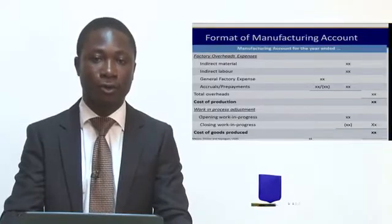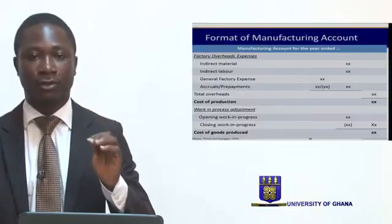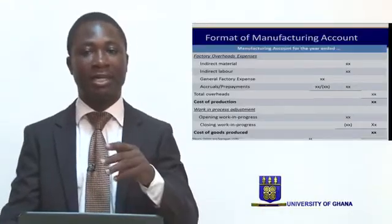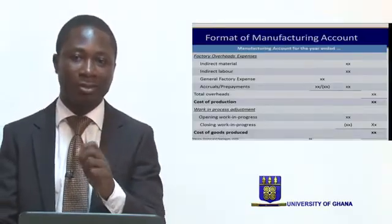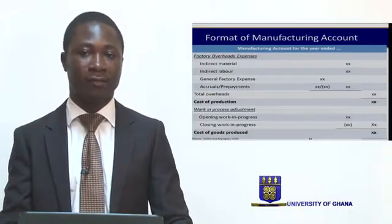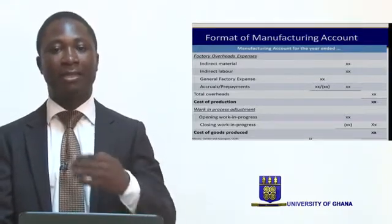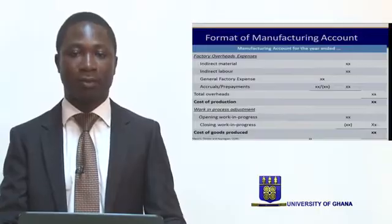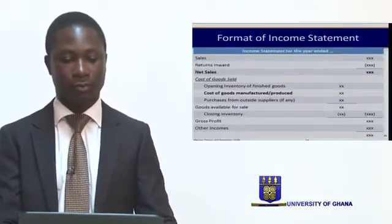Once we have our gross cost of production, any material which is still in process in an intermediate form at the beginning and end of the period could have an effect on the amount of goods produced within that period. Hence, we make adjustments for work in progress by adding the opening work in progress and subtracting the closing work in progress. When we are done, the figure we arrive at will be the cost of goods produced, which should essentially be the end of our manufacturing account.